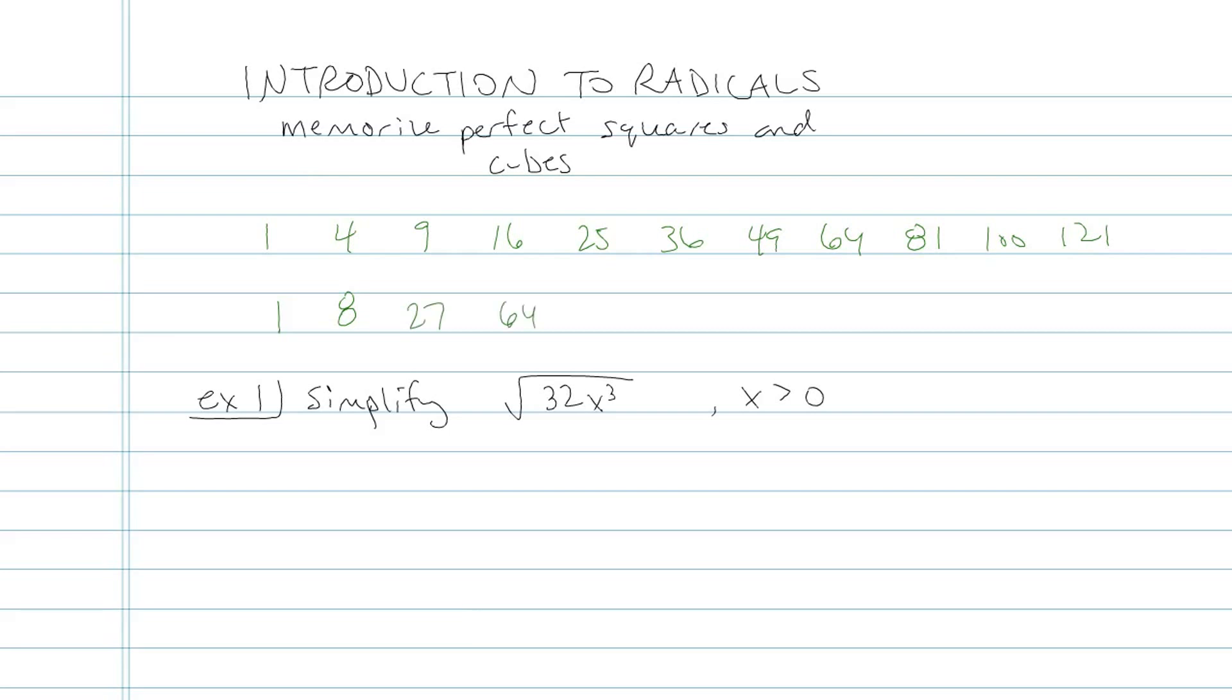Four to the third power is 64, five to the third power is 125, six to the third power is 216, seven to the third power is 343. I'm going to stop there because these numbers are getting pretty big. And if you were asked to do these without a calculator, you probably wouldn't be working with numbers quite as big as 243.